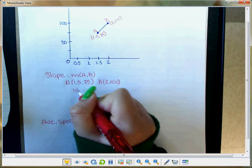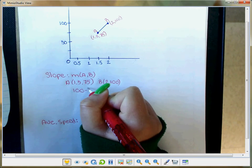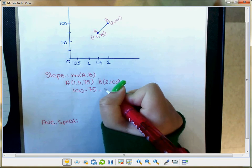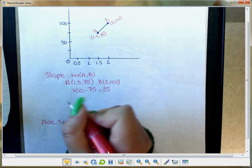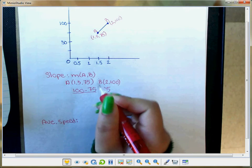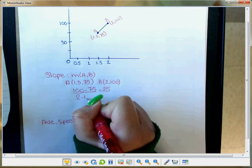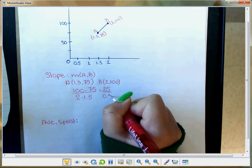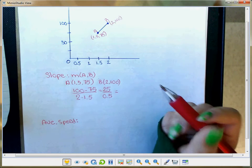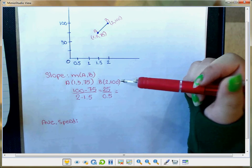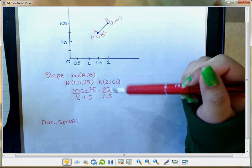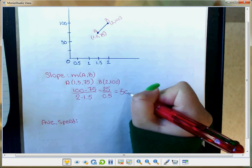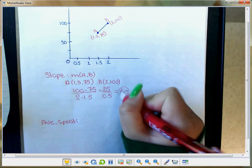You take 100 and subtract 75, which is 25. Then you take 2 and subtract 1.5, which is 0.5. You divide the top by the bottom, and it's 50, so the slope is 50.